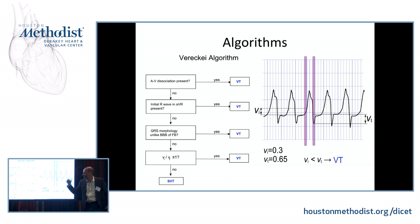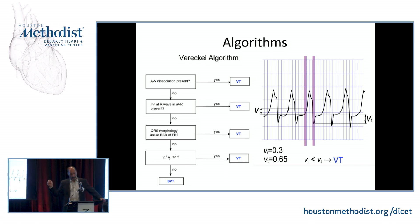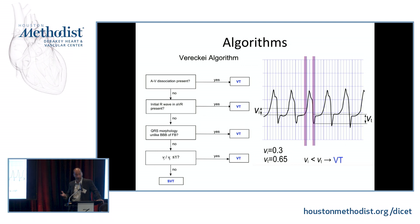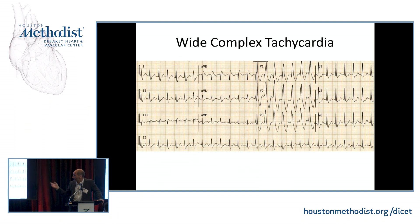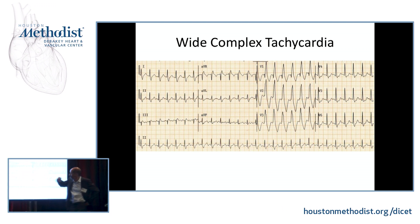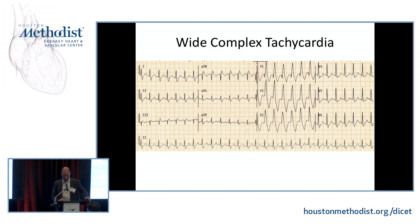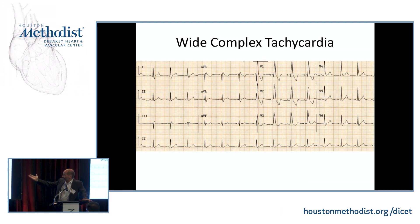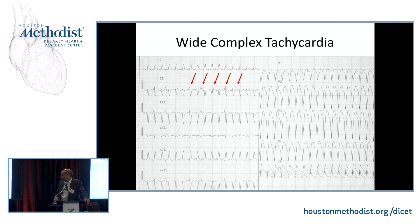In this example of wide complex tachycardia, you see a right bundle branch block pattern where the second rabbit ear is much taller than the first — this could be typical aberrancy. But looking at the baseline EKG, this patient with Ebstein's anomaly has a very wide right bundle branch block in sinus that looks exactly the same as during tachycardia. This illustrates why it is critical to have access to the baseline EKG.